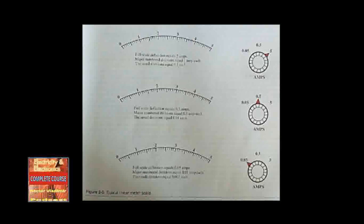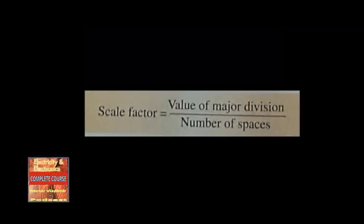The second example has a full scale deflection equal to 0.5 amperes; the major scale markings are equal to 0.1 amp each, and since there are 10 spaces between each major division, each small mark equals 0.01 amperes, or 10 milliamps. In the third example, the range selector is set to 0.05 amps, making full scale deflection equal to 0.05 amperes. Each major division equals 0.01 amperes, and each small mark equals 0.001 amperes, or 1 milliamp.